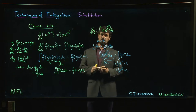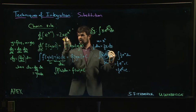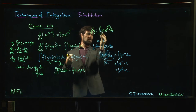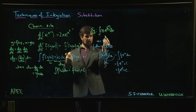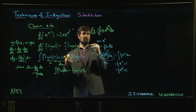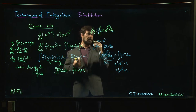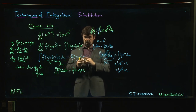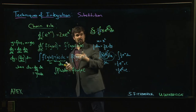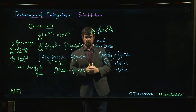Alternatively, since du = 2x dx and you need that exactly, you can multiply inside the integral by 2 and place a compensating ½ out front — we know constants can move in and out of integrals. Putting the ½ out front and the 2 inside doesn't change the value, and you then recognize the integrand as exactly the chain rule derivative of e^(x²). Either method works — use whichever one you prefer.